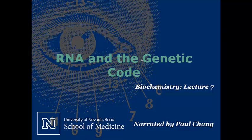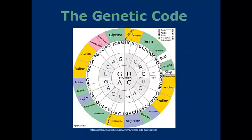In the previous lecture, we talked about DNA. Let's talk about the next in line, RNA, and the respective genetic code. The genetic code is listed as the bases required from RNA to create specific amino acids in line to create proteins.